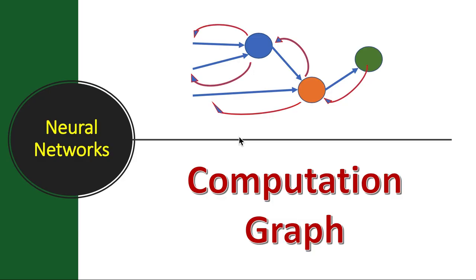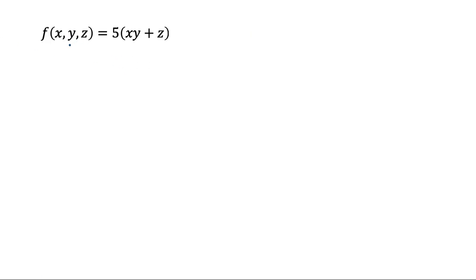To understand the computation graph, let's look at a simpler example - not a full-fledged neural network or logistic regression, but a very simple function of three variables. So f depends on x, y, and z, and this is a small, simple function.